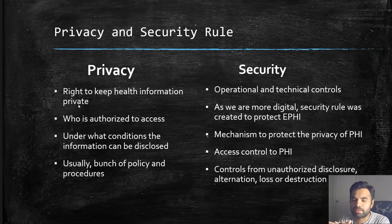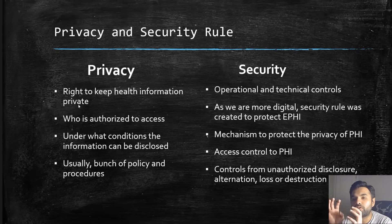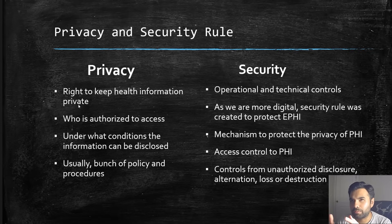The Privacy Rule is essentially policy and procedure — it lays out under what circumstances information will be disclosed, but there are no technical controls enforced here. When you visit a website, you implicitly accept the privacy policy of that organization. The Security Rule, on the other hand, involves operational and technical controls where you enforce firewalls, security groups, VPNs, and API gateways. As we became more digital, a new rule was created for ePHI — I believe about 10 years ago — to provide a mechanism to technically protect the privacy of PHI.